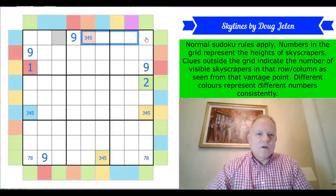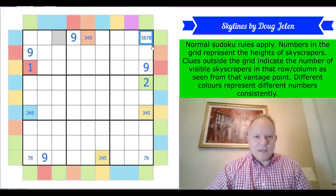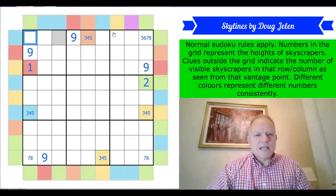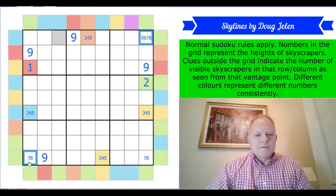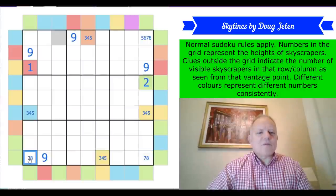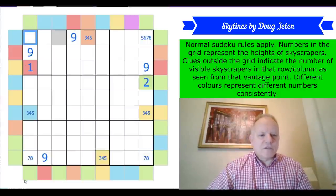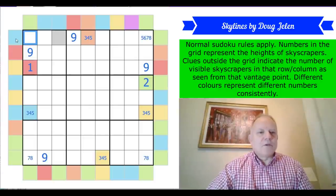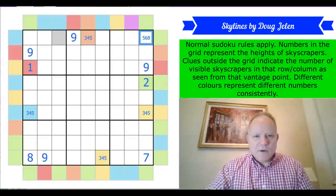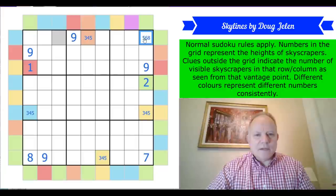We've got an eight-seven pair in those columns. Green is there so this cell is bigger than those four - which could be one, two, three, four - so that's five, six, seven, or eight. One of these two must be eight. If that was seven, this would have to be eight for the column looking up, and that can't be eight because blue is not two. So this is eight, that's seven.